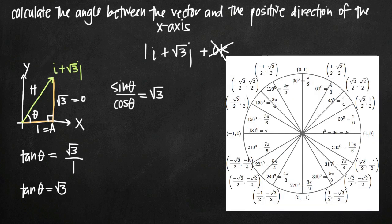Here's where our unit circle gets involved. We need to find a value for theta such that sine of theta divided by cosine of theta equals square root of 3. Because our vector starts at the origin and moves through the first quadrant, we look at values along the unit circle in the first quadrant. We can consider which of those coordinate points gives us square root of 3 when we divide the y value by the x value — remembering that y corresponds to sine and x corresponds to cosine. Dividing square root of 2 over 2 by square root of 2 over 2 gives us 1, so that point is not our answer.